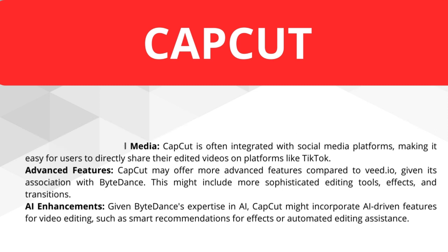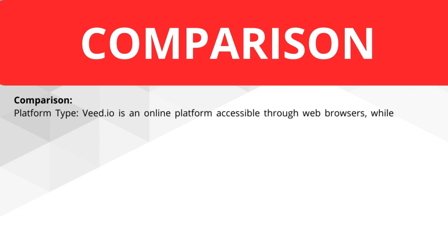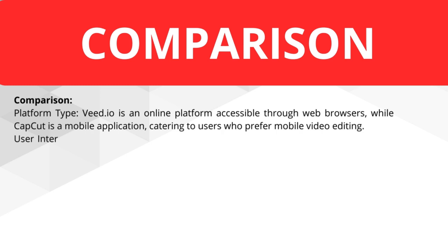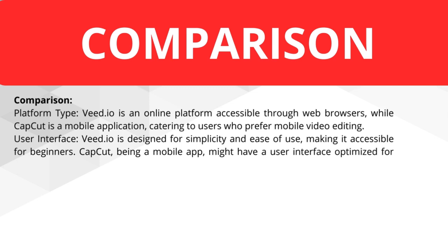Now for the comparison. In terms of platform type, Vite.io is an online platform accessible through web browsers, while CapCut is a mobile application catering to users who prefer mobile video editing. Regarding user interface, Vite.io is designed for simplicity and ease of use, making it accessible for beginners, while CapCut being a mobile app might have a user interface optimized for touch screens and could offer more advanced features.